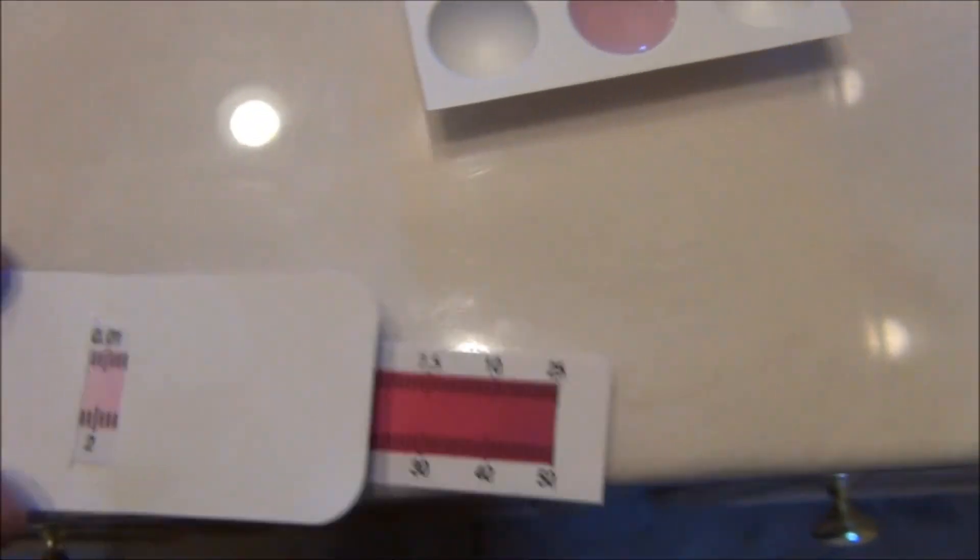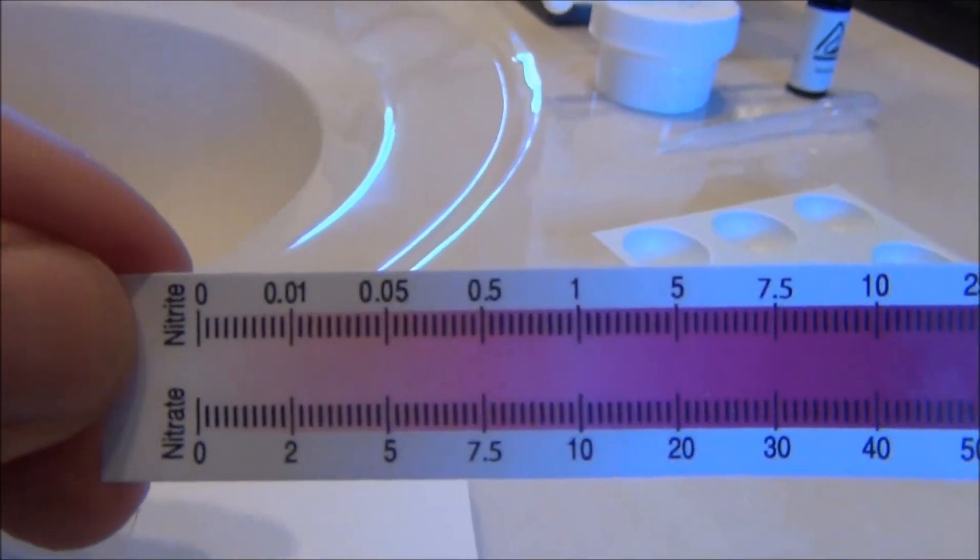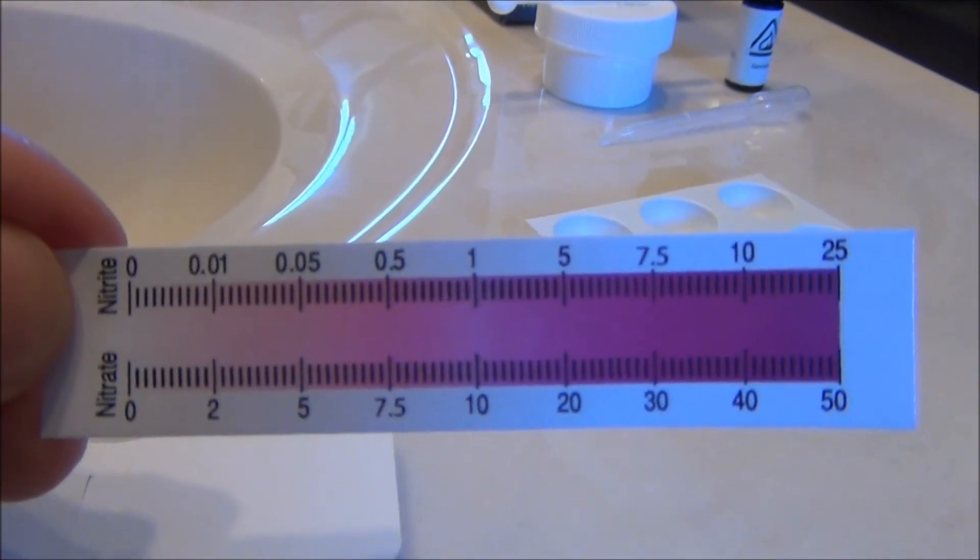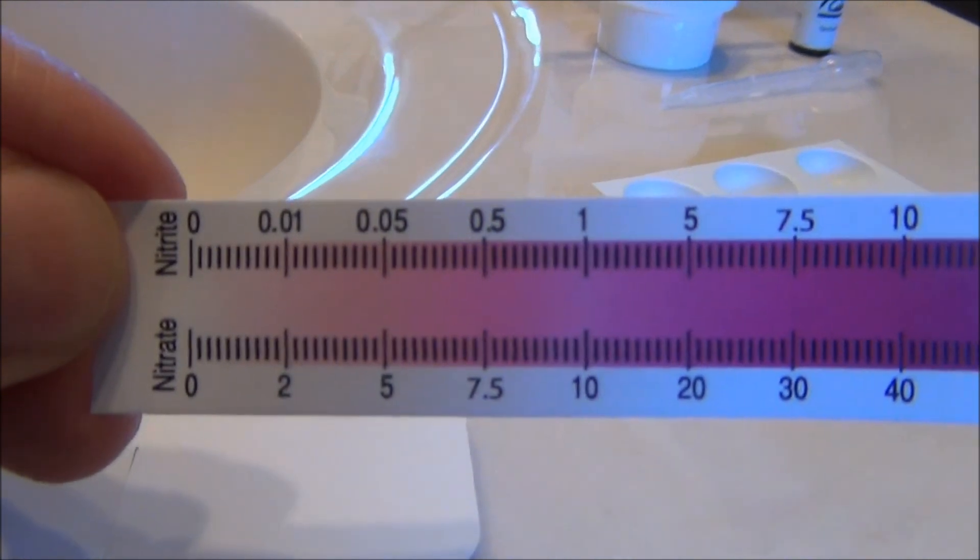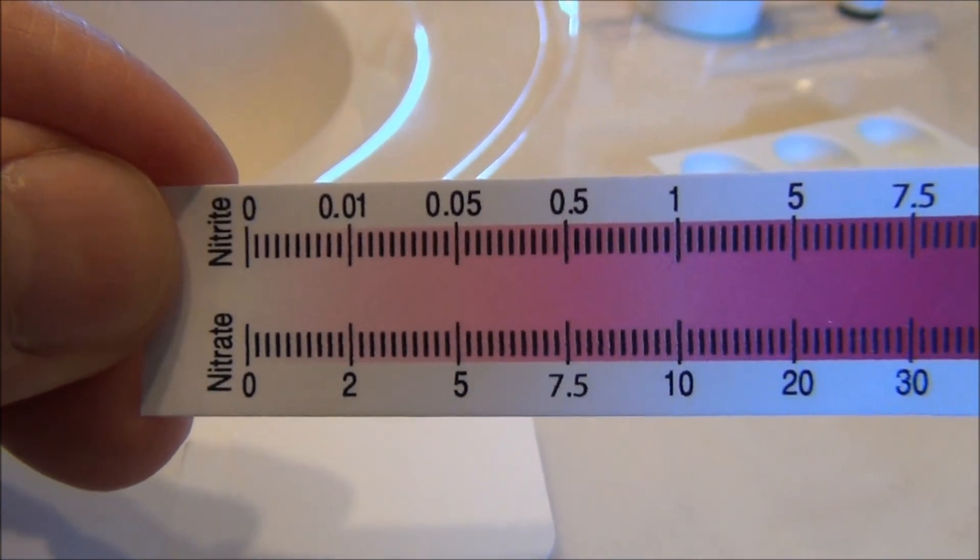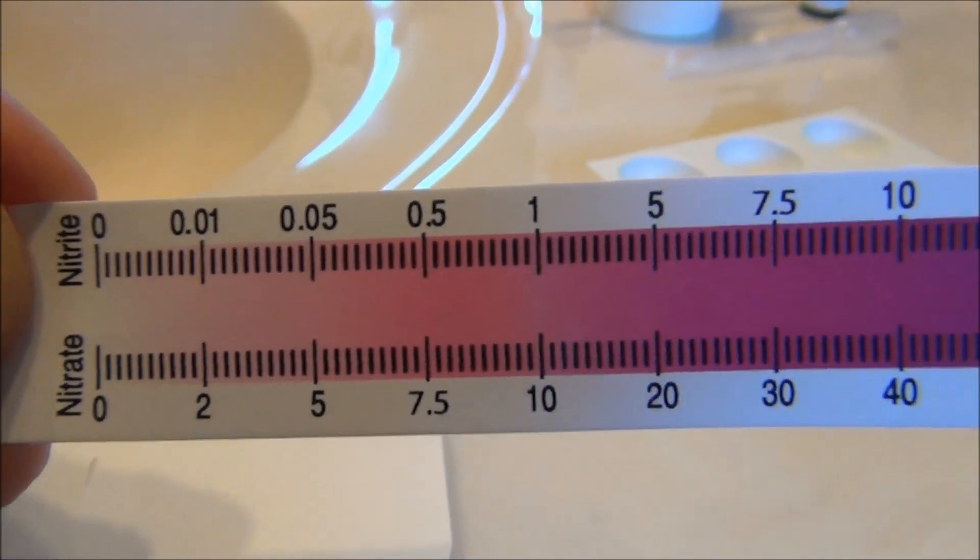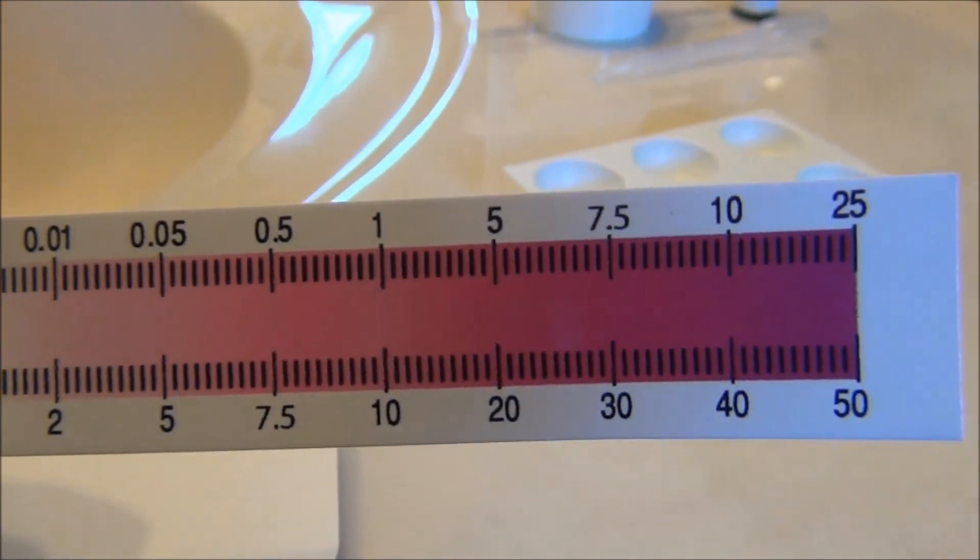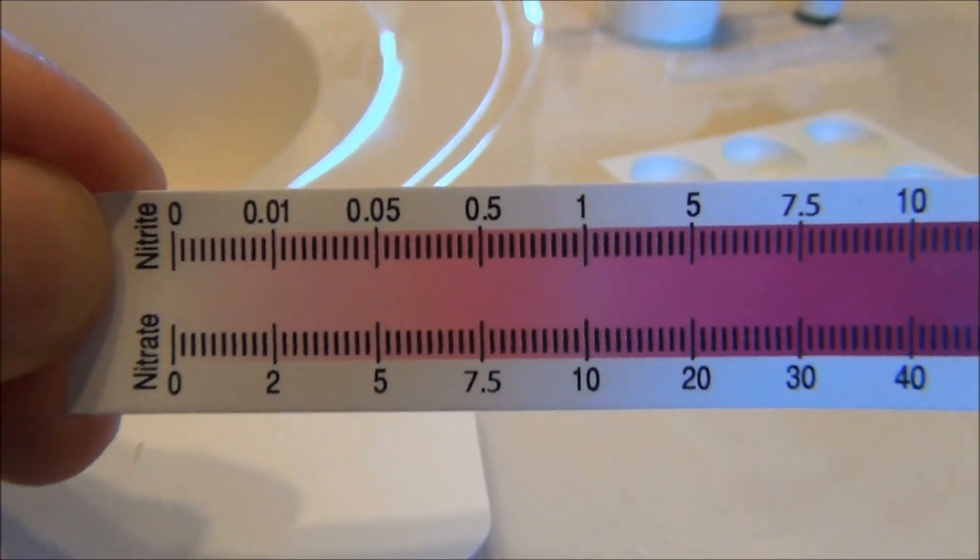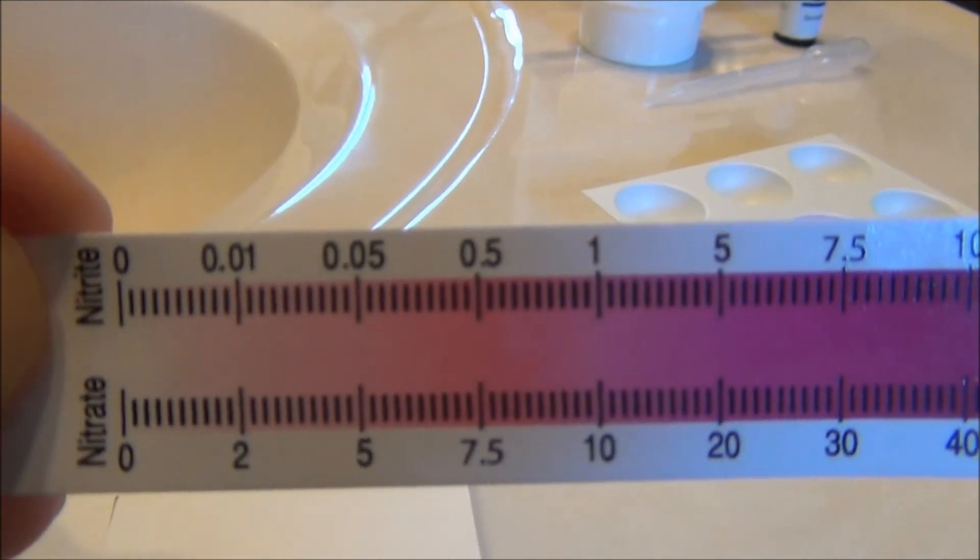We'll pull the chart here out just to show you. The top numbers is your nitrate or nitrite reading, and your bottom numbers here, this is for your nitrate results. You see it goes from 0 all the way to 2, 5, 7.5, 10, 20, 30, 40, 50. So you can get much more accurate with this.